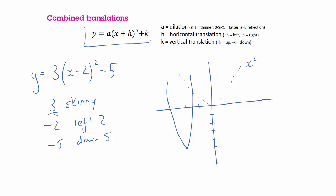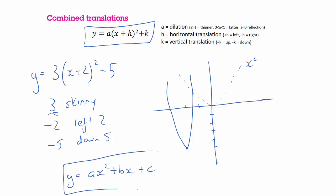This version is called the turning point form of a quadratic, which is different from the general form. You might remember the general form as y equals ax squared plus bx plus c. It's called the turning point form because the values of h and k tell you where the graph turns — in this case 2 across and 5 down. So that's turning point form, general form, and quick sketching by comparison to the original x squared.